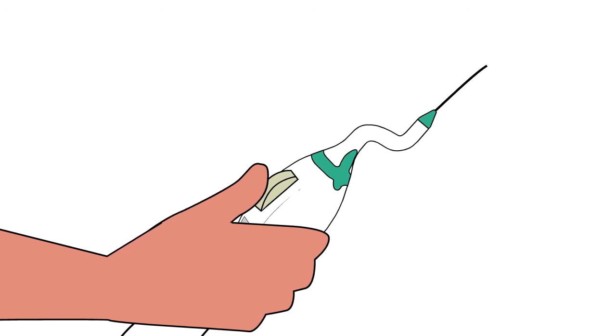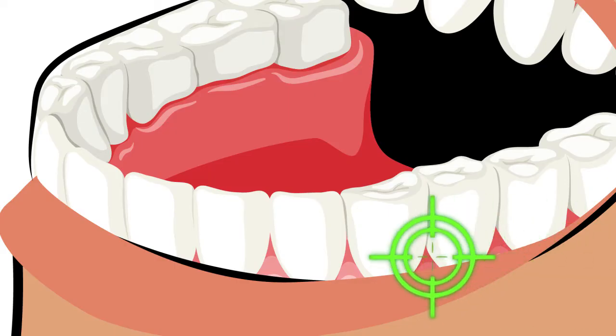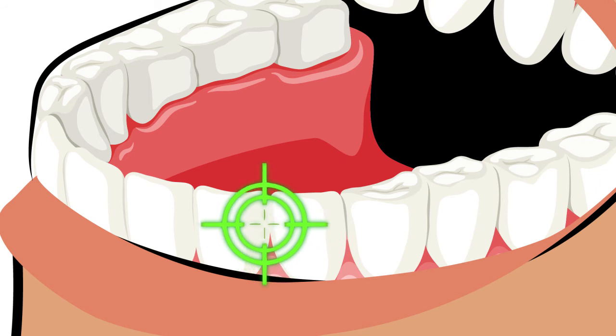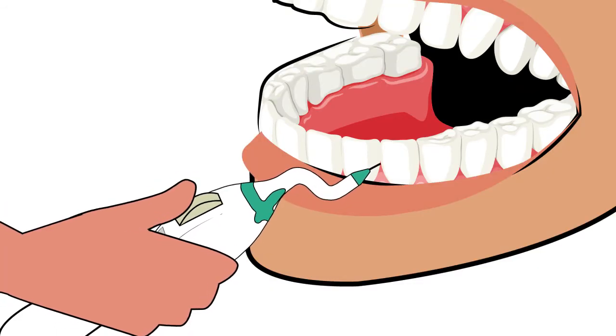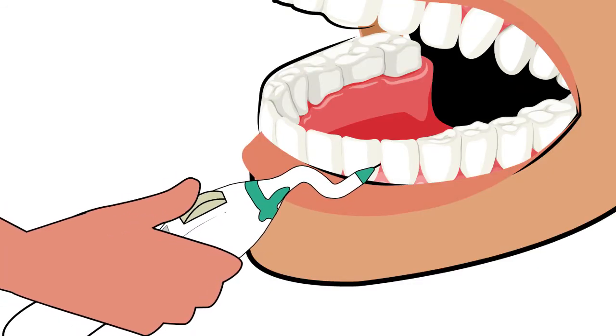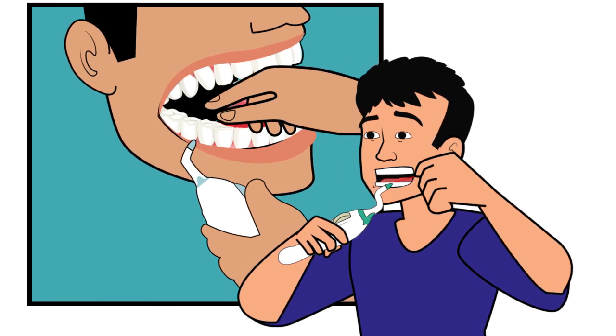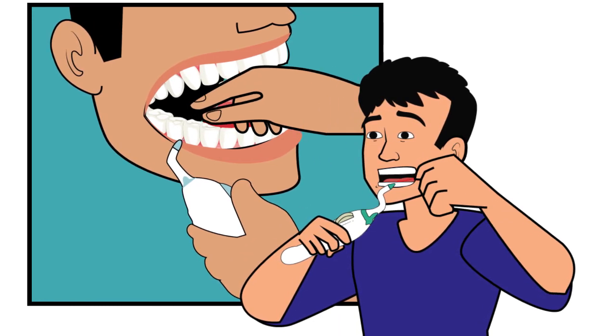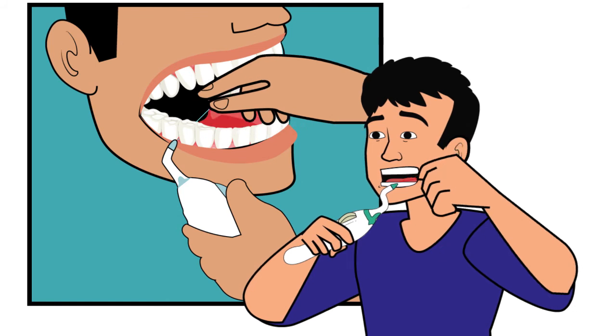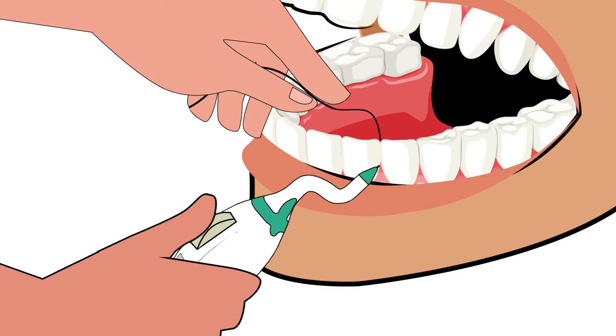Now, point the conical end of the loaded AutoFlosser into the dental space that you would like to clean. Continue to turn the drive wheel with your thumb in a direction away from the tip. As the leader end emerges from the opposite side of the dental space, hold the end using your free hand and pull the floss partially until the scrubbing section is centered in the dental space.